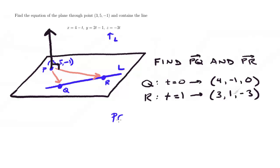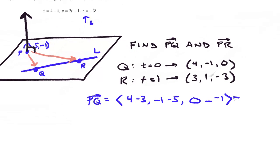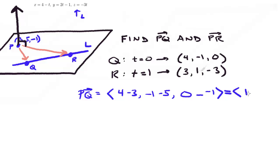Okay, so from here we can find PQ. What we do is we subtract the components. So the X component, we're going to have 4 minus 3. The Y component will have -1 minus 5, and then the last component is going to be 0 minus -1. And then when you simplify that, you'll get <1, -6, 1>.